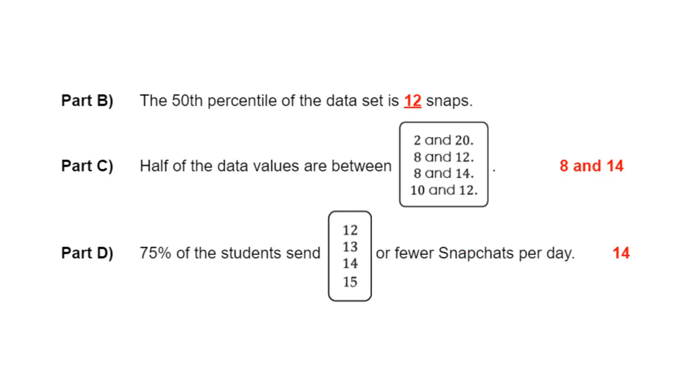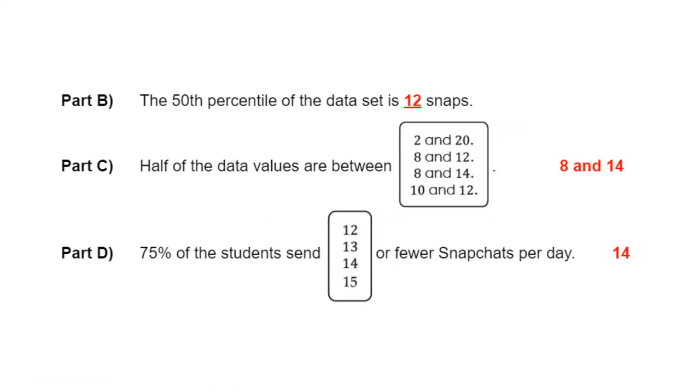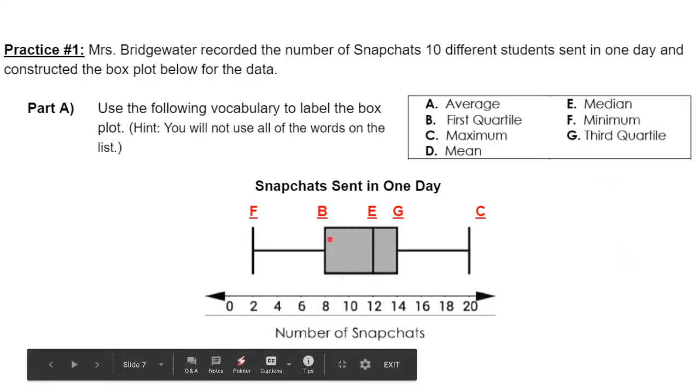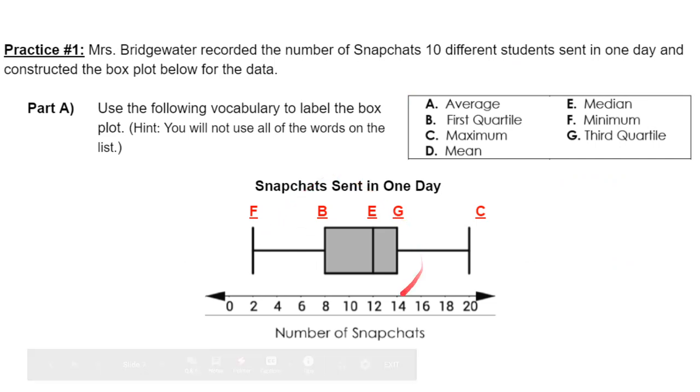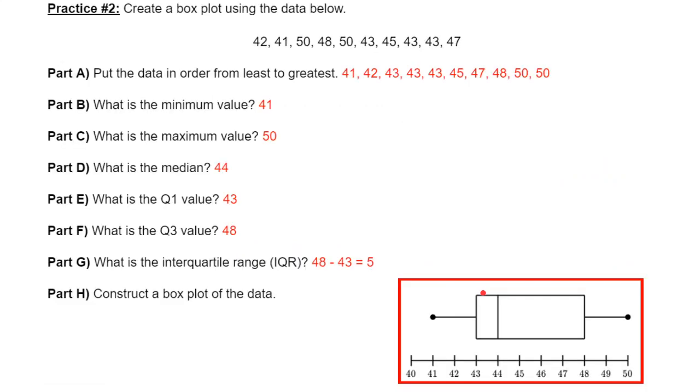The 50th percentile of the data set is 12 snaps. So 12 right here is the median - that's 50%, that's right in the middle. Half of the data values are between 2 and 20, 8 and 12, 8 and 14, 10 and 12. Remember, the half can be determined between the first quartile and the third quartile. So we got 8 and 14. 75% of the students send 12, 13, 14, 15 or fewer Snapchats per day. Well, 75 would be the third quartile. So the third quartile is 14. So 14 or less.